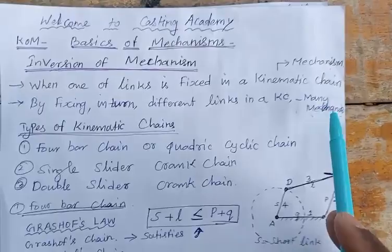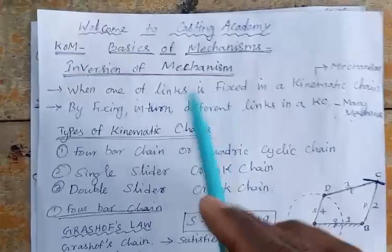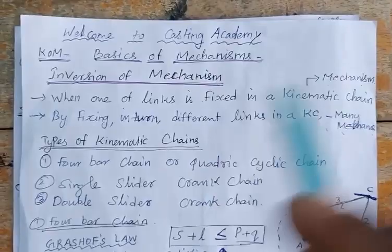That is the idea behind the inversions of mechanism. Inversions of mechanism means: if we alter the links by fixing them in turn, we obtain different mechanisms. That is called inversions of mechanism.